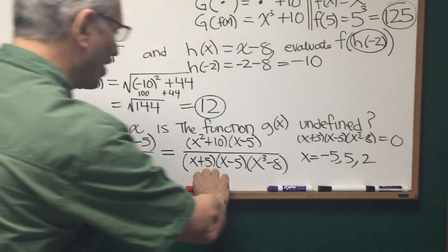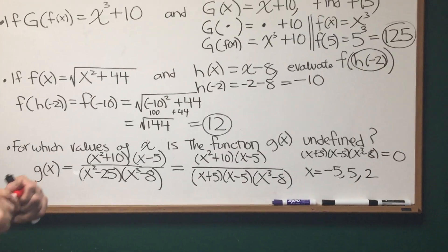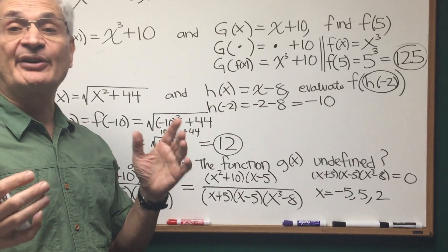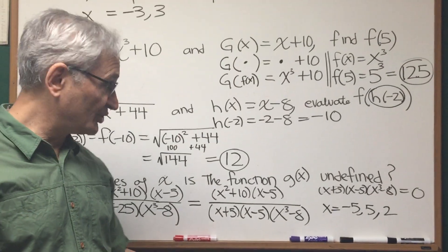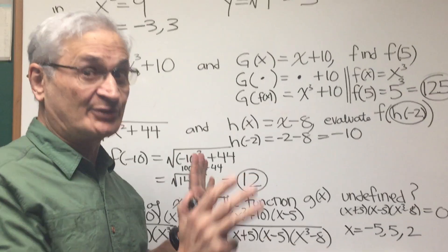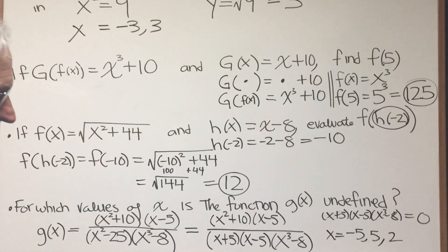Just one more comment. Notice that the x minus 5s can be canceled. But even if they can be canceled, that still disqualifies 5 from being a valid input value to this function. We cannot have 0 over 0. If we were taking the limit, it would be different. But we're not doing that in this case. Those are the three undefined values.